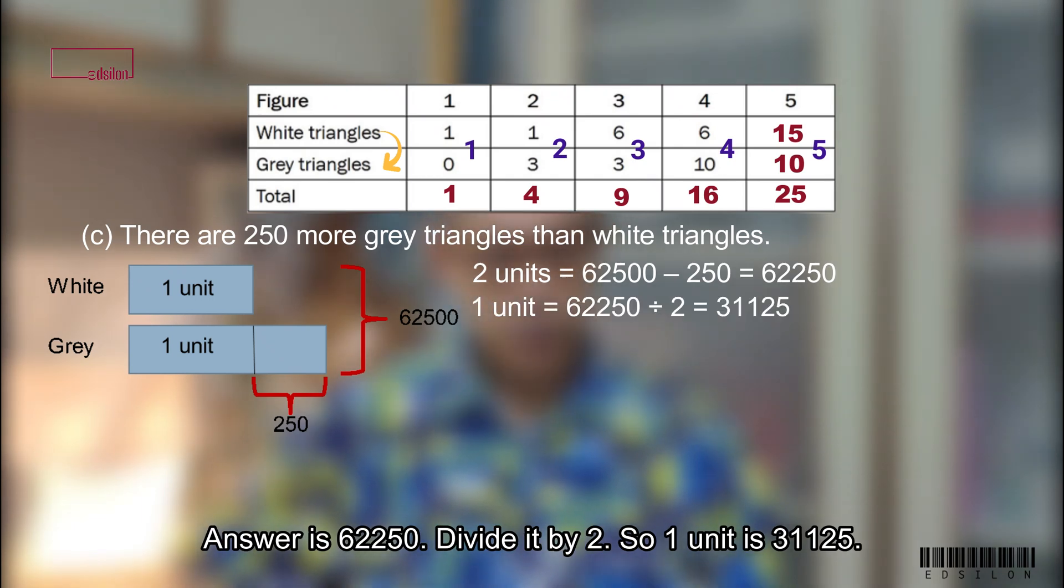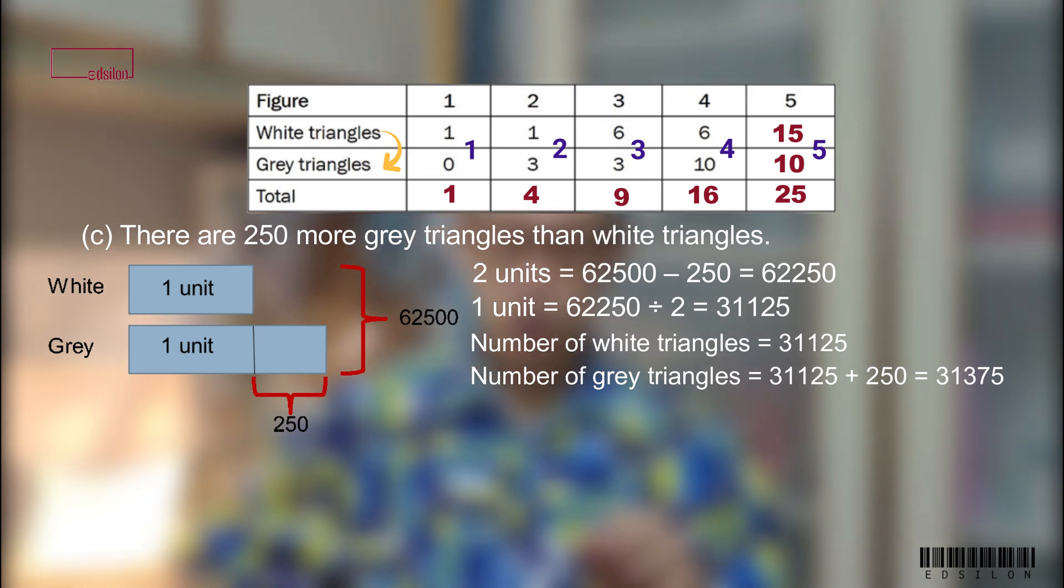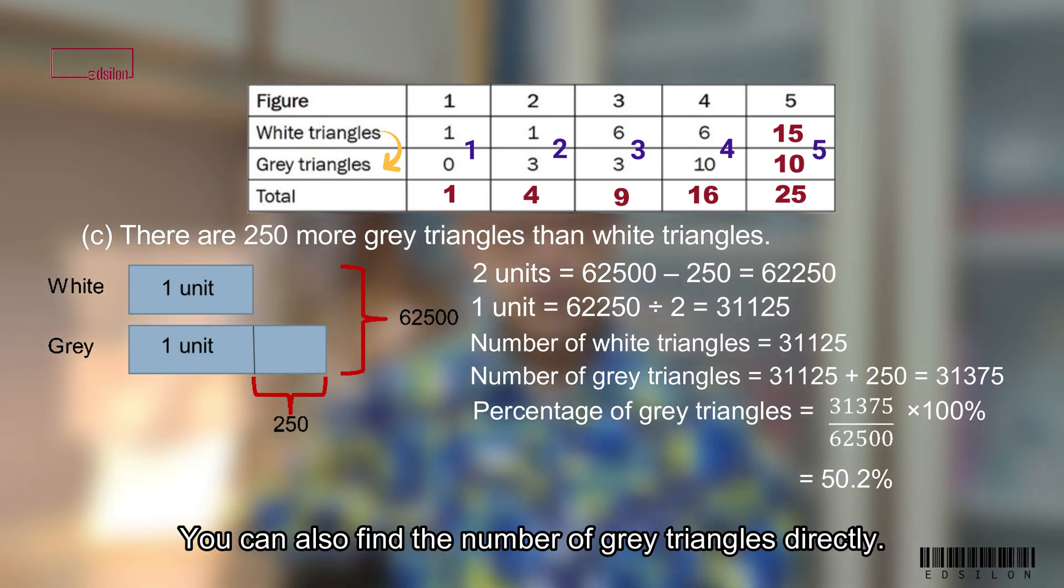Divide it by 2. So, one unit is 31,125. Number of grey triangles is this number plus 250. Answer is 31,375. Use this number to calculate the percentage.